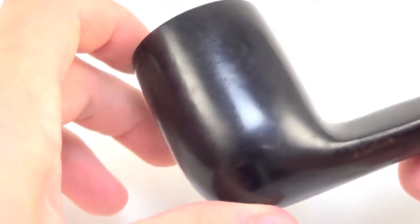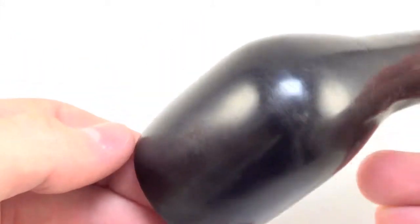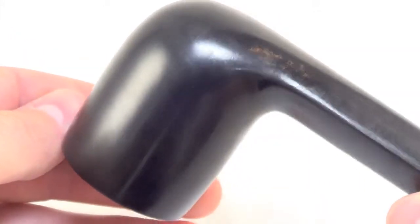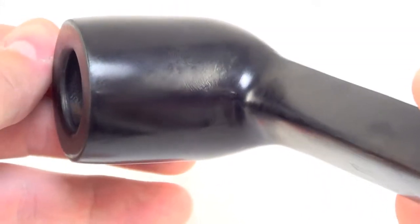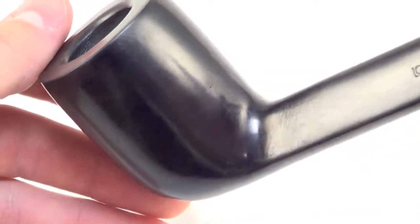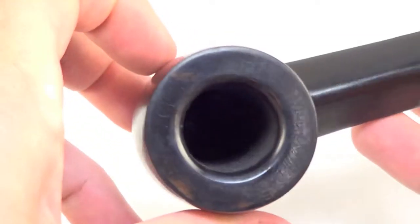There you can see that dark black ebony stain all the way around the wood. Again, brand new, unsmoked.